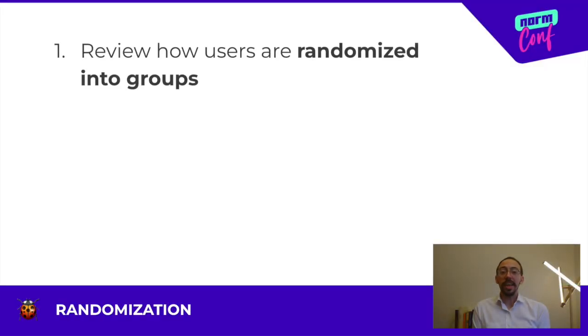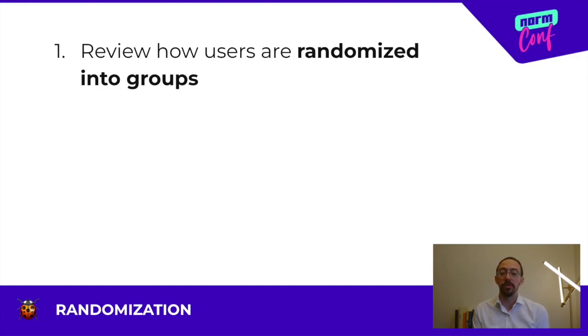I've seen off-by-one errors, race conditions, broken persistence, and bad weighting. Here's what you can do to help: check how users are randomized into groups. We want to see either a seeded random or hashing approach. Both of these provide deterministic randomness that gives us stronger guarantees when our experiment goes live.